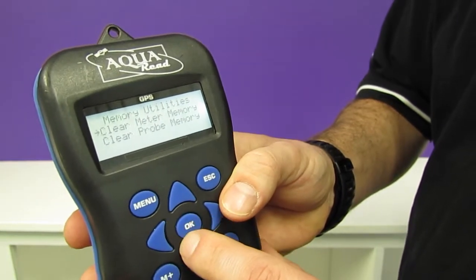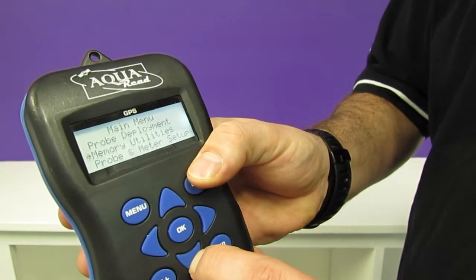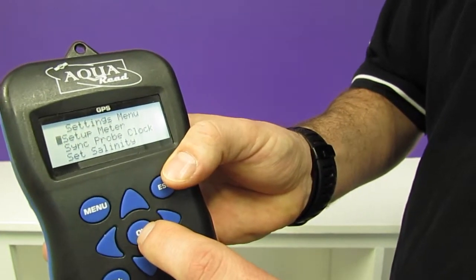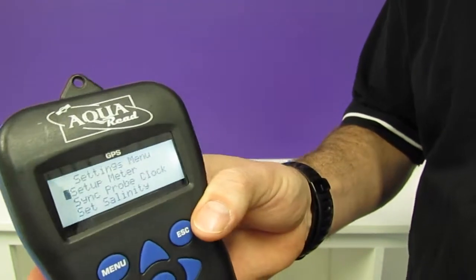In the memory utilities we have the option to clear the memory of the meter and of the probe. And in the probe and meter setup we have the option to set up the meter and set up units and this kind of thing.